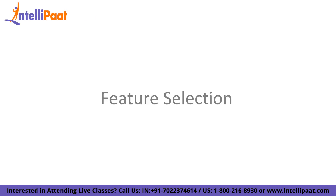Moving on to feature selection. It is a process of selecting the subset of most appropriate and relevant features to be used in model building, either automatically or manually. Feature selection is accomplished by either including or excluding irrelevant features from the dataset without changing them. Some compelling reasons to use feature selection are: it helps reduce the complexity of a machine learning model, it helps improve the accuracy of a model, it is used to reduce overfitting, and it allows machine learning models to train faster.